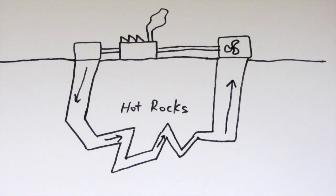The water runs over the hot rocks where it's heated up and returns to the surface as hot water and steam, where its energy can be used to drive turbines and electricity generators.